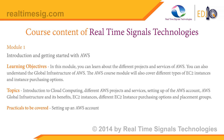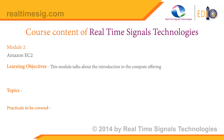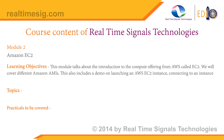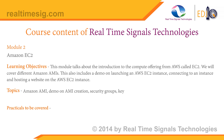The AWS course curriculum covers: AWS Platform, Global Infrastructure and its benefits, EC2 instances, different EC2 instance purchasing options and placement groups. Module 1 practicals include setting up an AWS account. Module 2 covers Amazon EC2 — an introduction to the compute offering from AWS — covering different Amazon AMIs, with a demo on launching an AWS EC2 instance, connecting to an instance, and hosting a website on the EC2 instance.